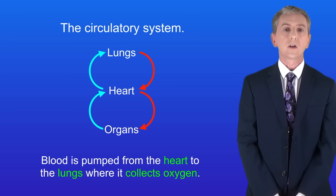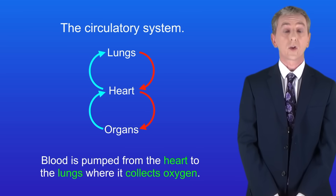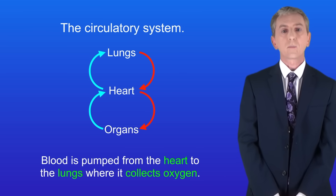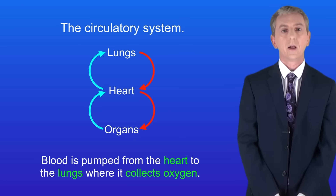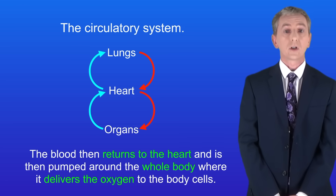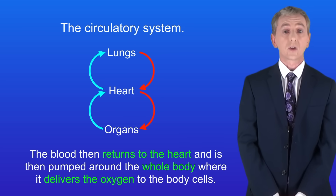In the last video we saw that humans have a double circulatory system. Blood is pumped from the heart to the lungs where it collects oxygen. The blood then returns to the heart and is then pumped around the whole body where it delivers the oxygen to the body cells.